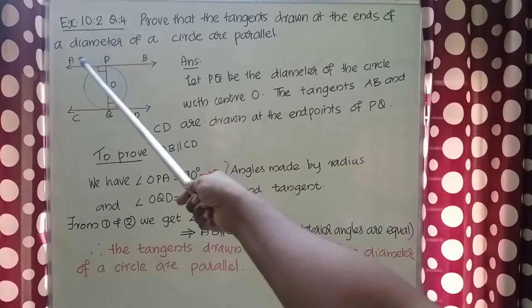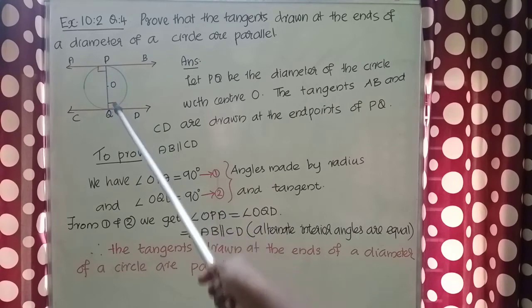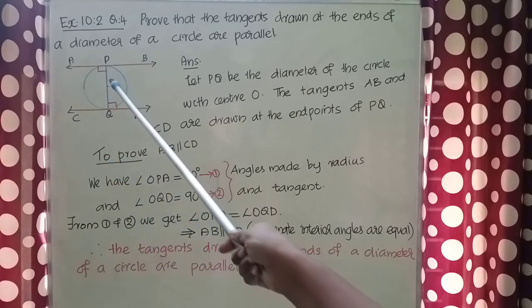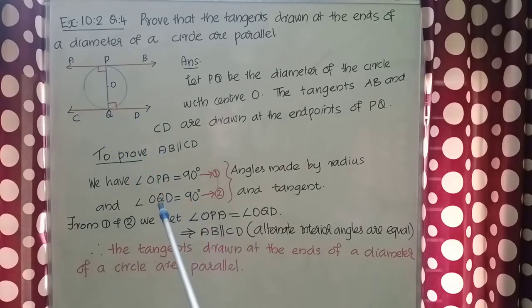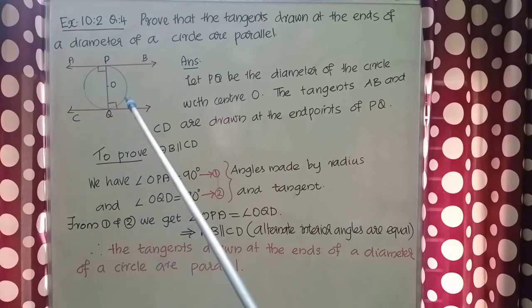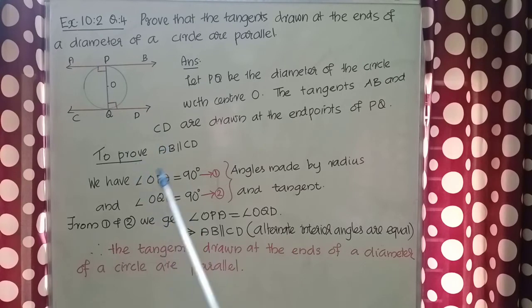Angle OPA, angle OQD is this one. There also OQ is the radius and CD is the tangent. So the angle OQD is also formed by radius and tangent. So both angles are 90 degrees.